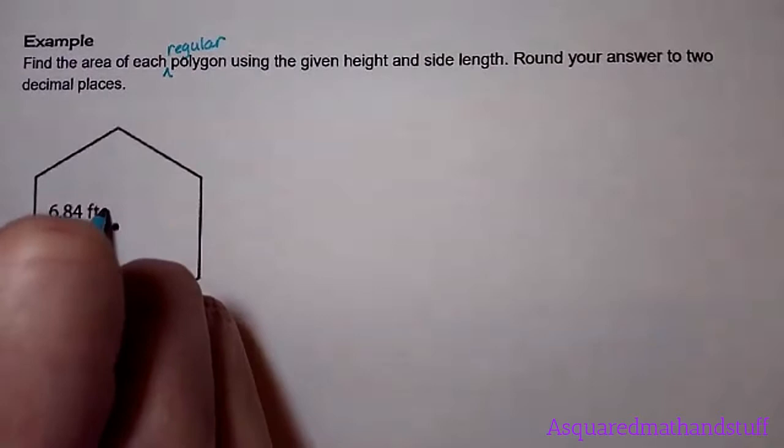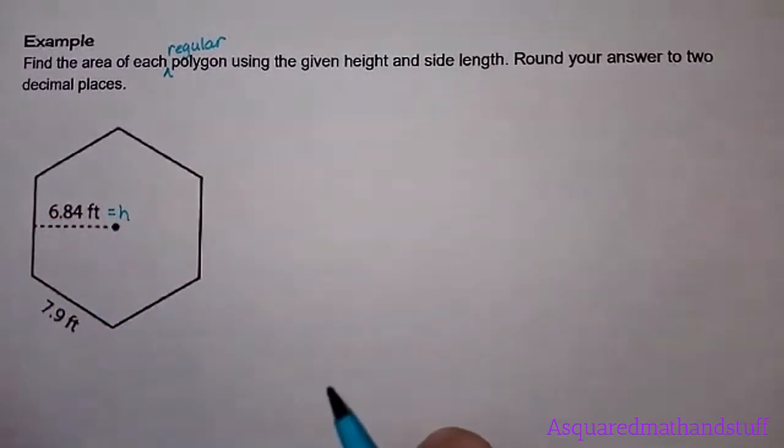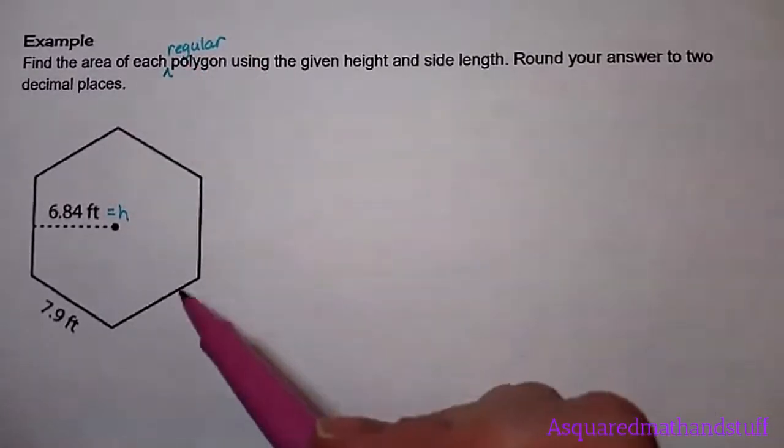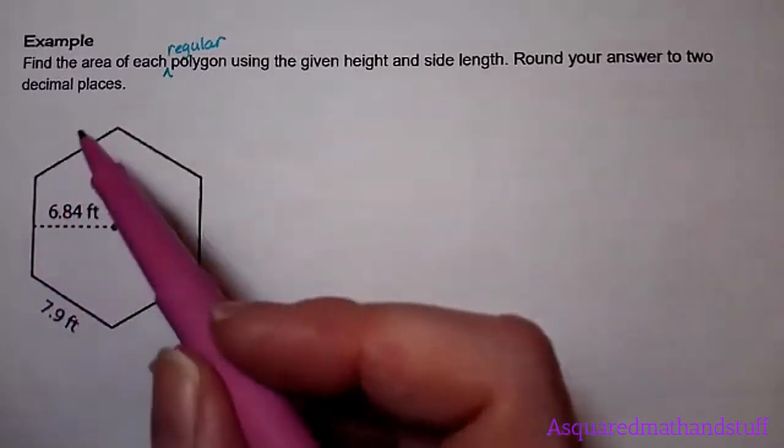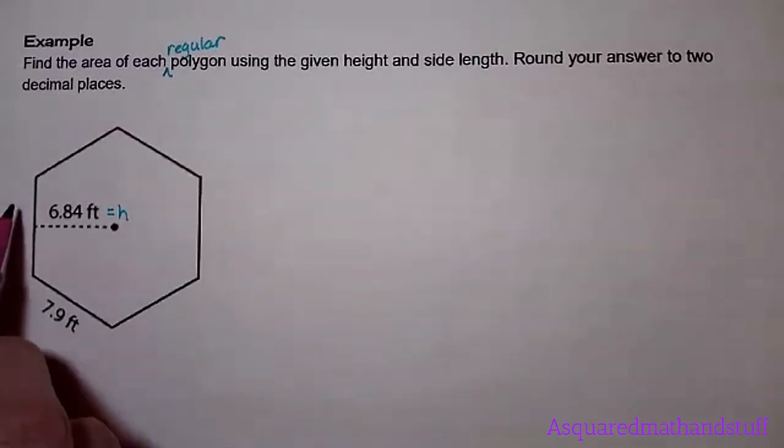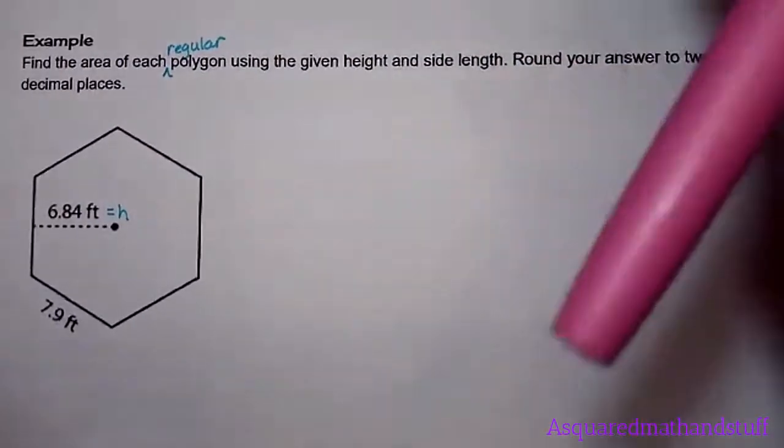We are given the height, and that is going to be our 6.84, and the side length is our 7.9. Since this is a regular polygon, that means that all of the sides are the exact same length. If this side length is 7.9 feet, that means this side length here is also 7.9 feet.